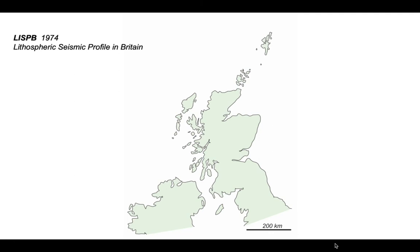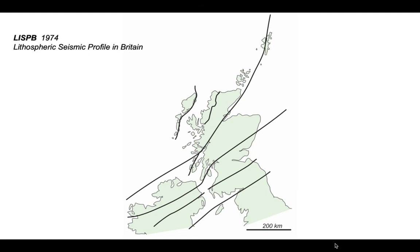This was a wide-angle experiment, and the idea was to understand the lithosphere structure in Britain, particularly Northern Britain, and particularly where some of the major geological structures went to with depth. These are the major geological structures of Northern Britain, with various fault zones labelled, including the southern one which is the Iapetus suture, and a whole series of major fault zones running across Scotland and traceable into Ireland. The target was trying to image these.